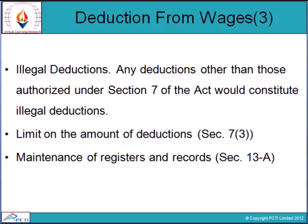Illegal deductions: any deduction other than those authorized under Section 7 of the Act would constitute an illegal deduction. Section 7 gives us the idea about what are the legal deductions; anything outside those authorized deductions comes under illegal deductions. There are also limits on the amount of deductions, and maintenance of registers and records is required.